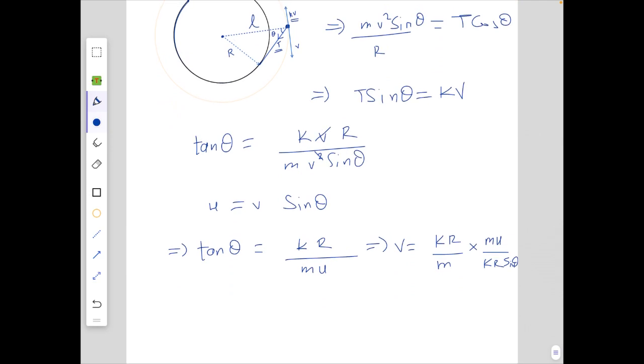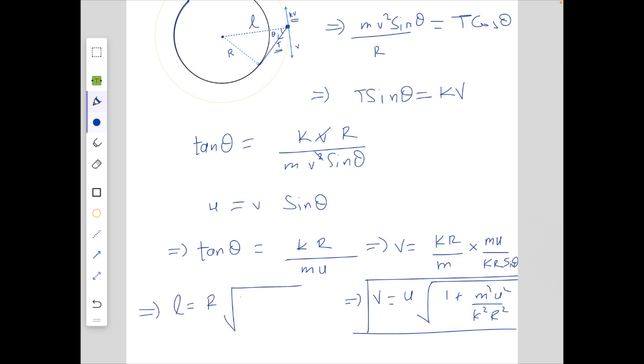This will be V equals U by sine theta and sine theta from here is root of 1 plus m square u square over k square r square. So this is the final answer for the speed. For the radius we have to find the value of L which is r over sin theta. So the value of L equals r root of 1 plus m square u square by k square r square.